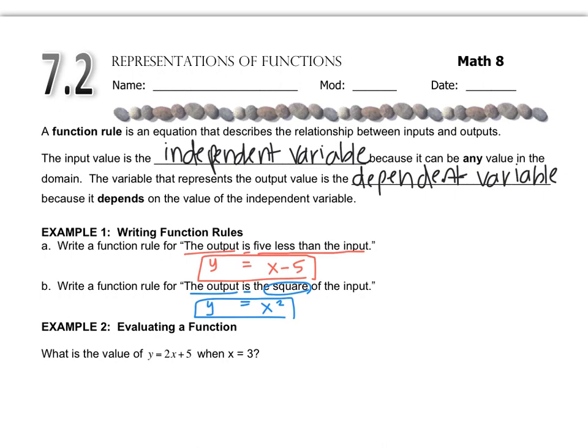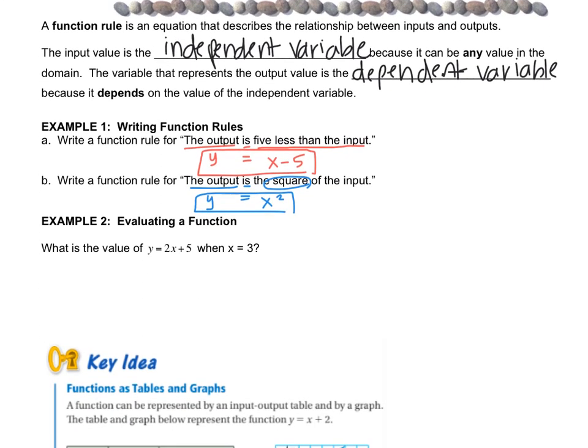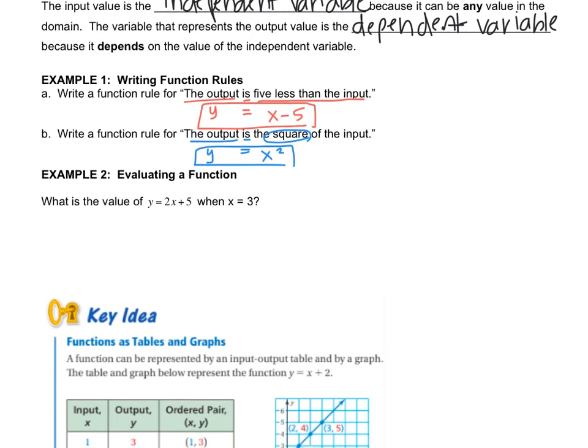This is something you've done before, but the directions are changing. Now we're calling it a function, but all they want you to do in example two is say what you get when you plug in 3. Very simply, rewrite the equation but instead of X, put 3. So Y equals 2 times 3 plus 5, which gives me 11.